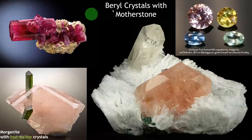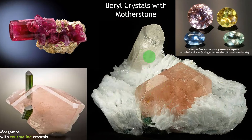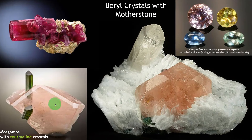Now look here — beryl crystals with mother stones. The white color area is the mother stone. There are two kinds of growth: emerald beryl, and goshenite white color. Morganite is also here. It is a mother stone with red beryl, or mixed white. This is morganite — inside the morganite crystal there is a tourmaline crystal. This is morganite with tourmaline crystal. There are two tourmaline crystals.